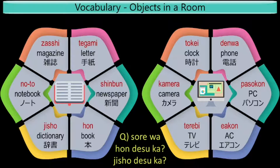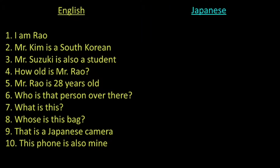There are two alternatives from which an answer has to be chosen — it has to be either a book or a dictionary. If it is a book, the answer will be Hon desu. If it is a dictionary, the answer will be Jisho desu. In answering this type of question, Ai or Eie is not used, and you have to choose from the alternatives only.